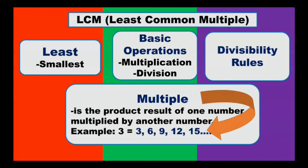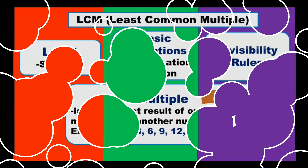For example, 3 has multiples of 3, 6, 9, 12, 15, and so on. Why? Because when you multiply 3 times 1 you get 3, 3 times 2 you get 6, 3 times 3 you get 9, 3 times 4 you get 12, 3 times 5 you get 15, and so on. These are the multiples of 3 — or you are just skip-counting by 3.